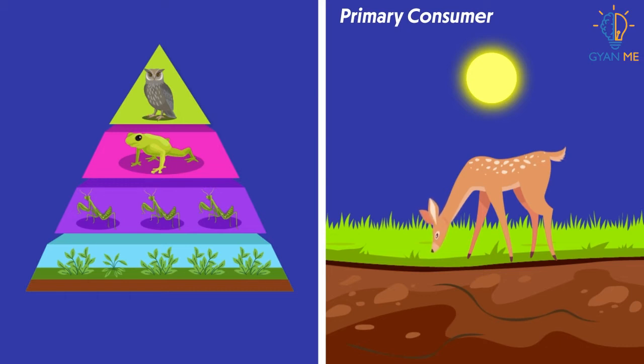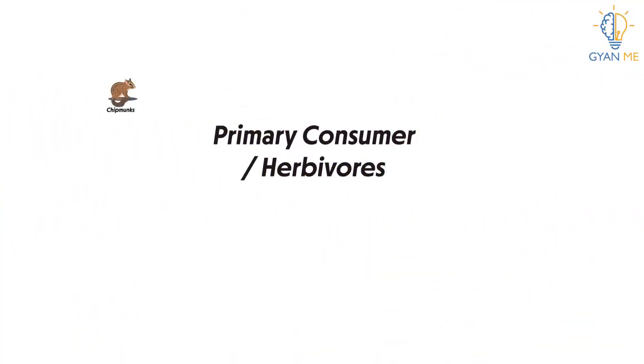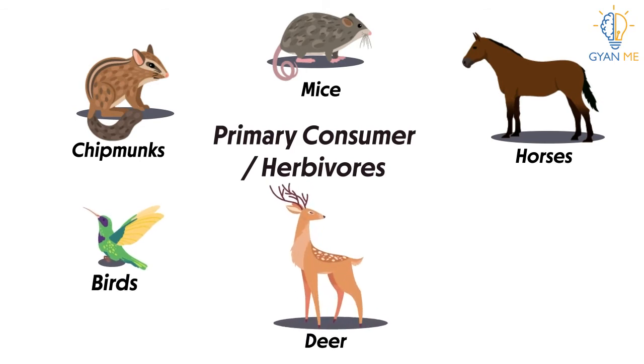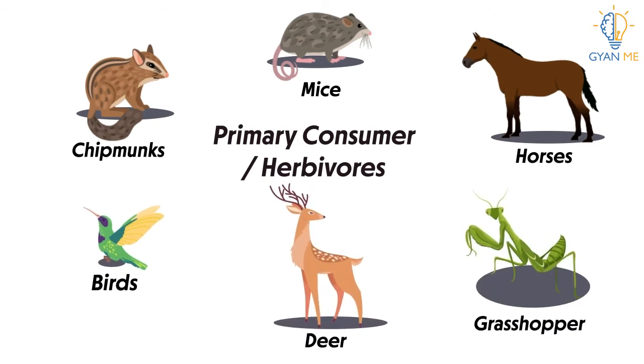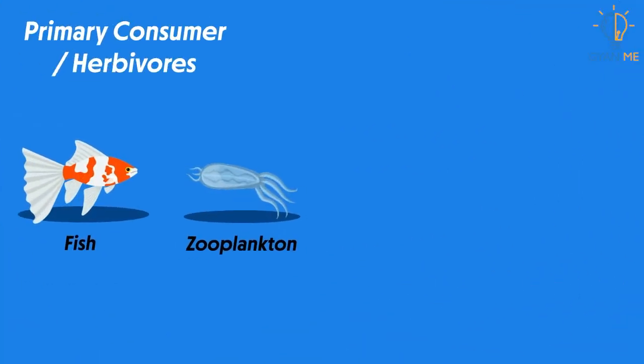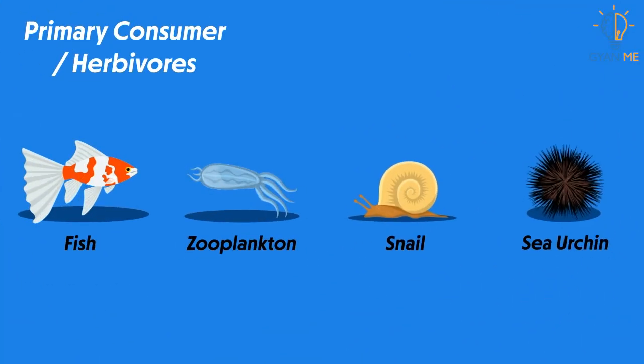Examples of primary consumers or herbivores are chipmunks, mice, horses, birds, deer, some insects, etc. While in water, fish, zooplankton, snails, sea urchins, etc. form the primary consumer group.